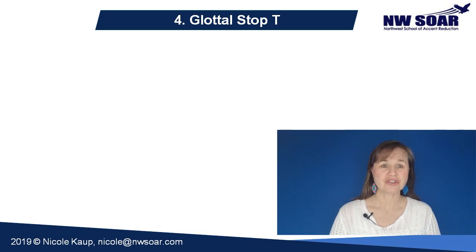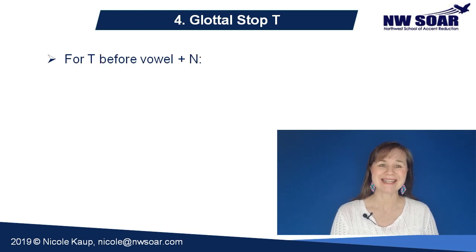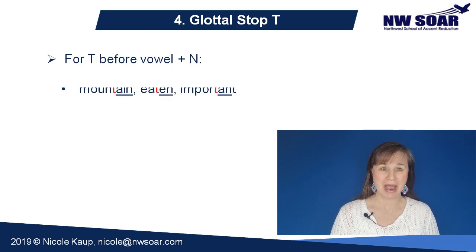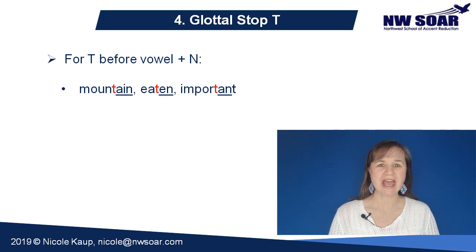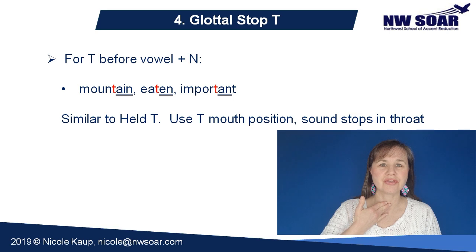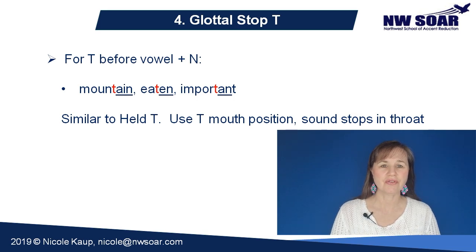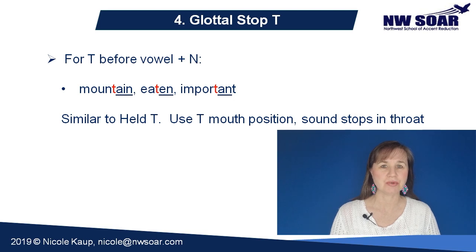The fourth T variation is an uncommon sound in American English, but it occurs in a few common words. It's the glottal stop, and it occurs before a vowel plus an N sound. Examples include 'mountain,' 'eaten,' and the first T in 'important.' It's similar to the held T, but the sound is stopped here in your throat. Mountain. If this sound is difficult for you to produce, think of it as a held T, and then move straight to the N sound. Do not pronounce the vowel sound between the T and the N. Let's try it together: mountain, eaten, important.